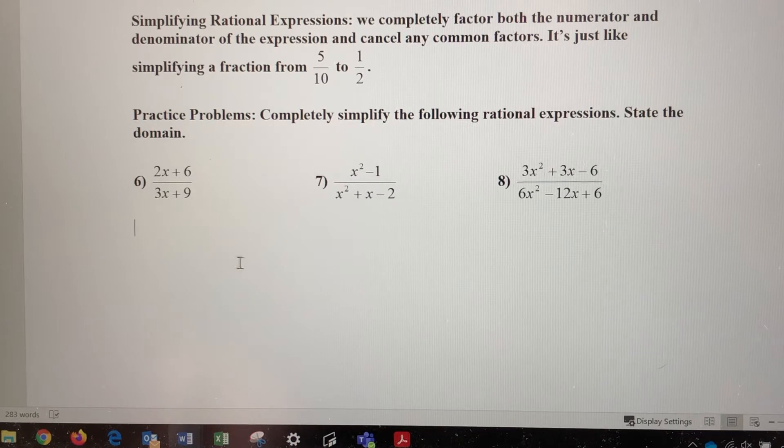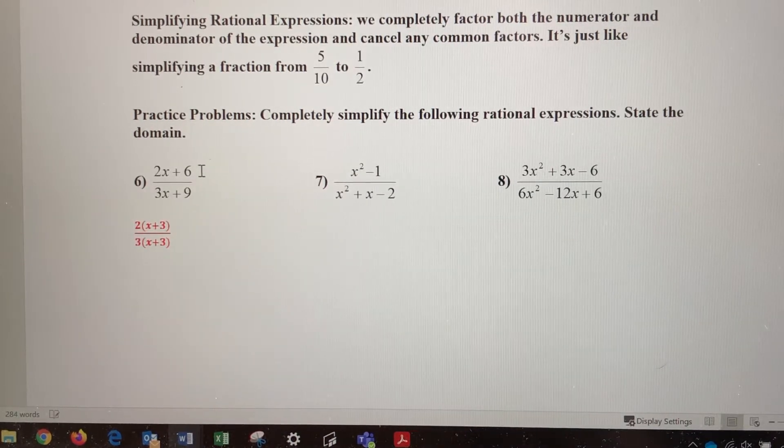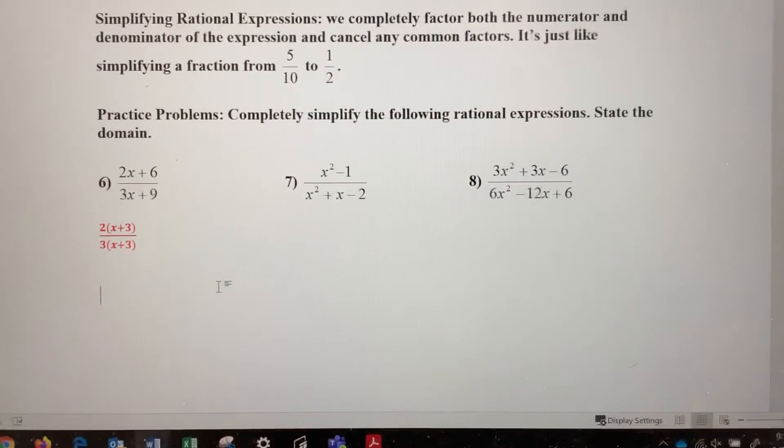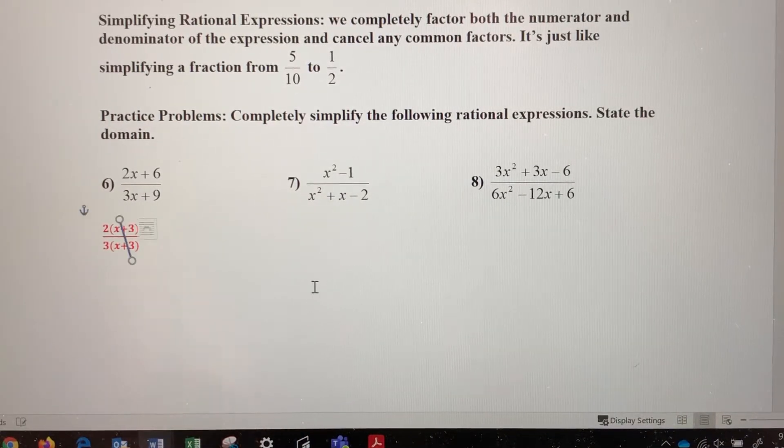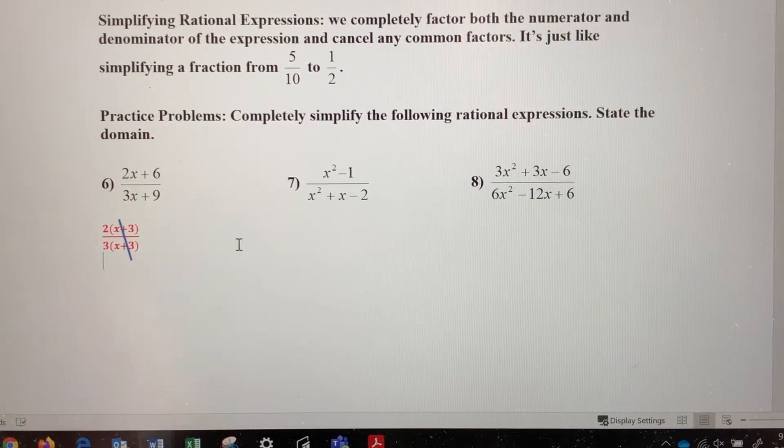So when we factor the numerator and denominator, we're going to factor out a GCF. In the numerator, we can take out a 2, and we're left with x plus 3. In the denominator, we can take out a 3, and we're also left with x plus 3. So these factors are the same, so those x plus 3s cancel out. So when I simplify this expression, I get 2 thirds.